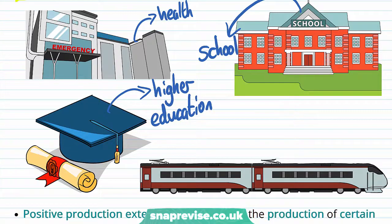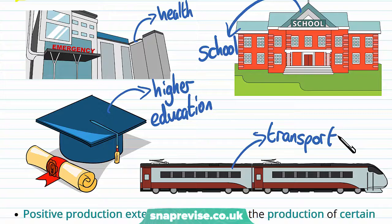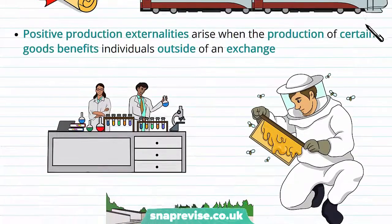Public transport is also an example, as it decreases the amount of pollution in the air, which helps people as a result. When I decide to take the bus into town, I forego going in my private car and reduce the amount of pollution I put into the air.